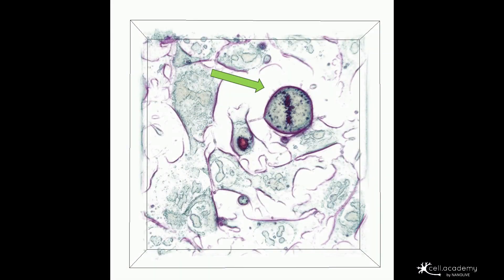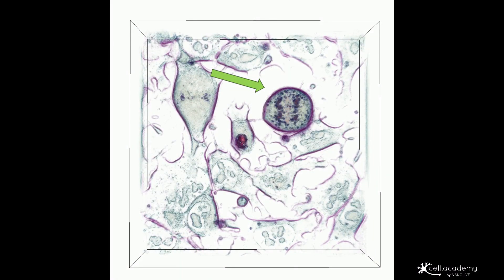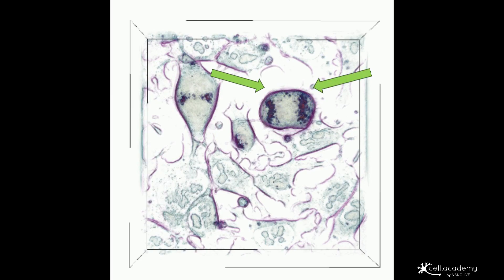It is during anaphase that the sister chromatids are separated and pulled apart by the mitotic spindle to each opposing pole of the cell. This keeps one copy at each extremity of the cell, gathering a full set of chromosomes on each side.